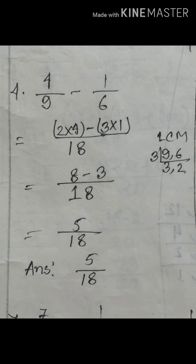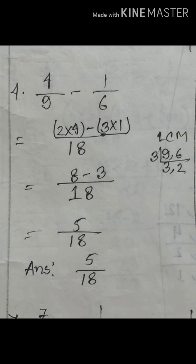এখন আমরা একটি fraction-এর subtraction অর্থাৎ ভগ্নাংশের বিয়োগ করবো। প্রশ্নটি হচ্ছে 4/9 minus 1/6। তাহলে আমার প্রথম কাজ কী? বলো তো বাবা, 9 এবং 6-এর LCM কী? এ 2 কে আমি numerator 4-এর সাথে multiply করবো। তাই লিখবো 2 multiplication 4 minus। আবার একই কাজ করবো: 6 দিয়ে LCM 18 কে divide করবো। divide করার পরে 3, আর এ 3 কে আমি numerator 1-এর সাথে multiply করবো। তাই লিখবো 3 multiplication 1।